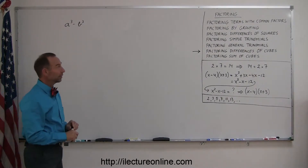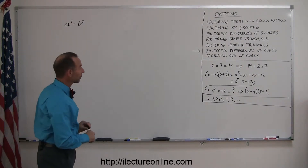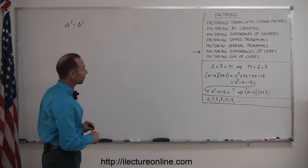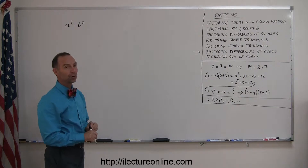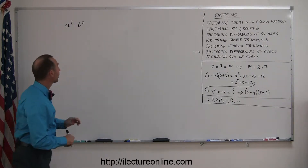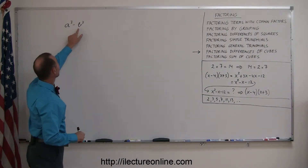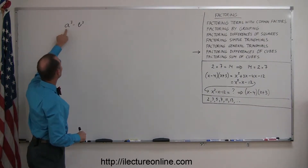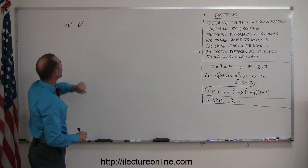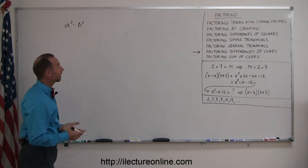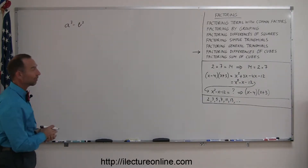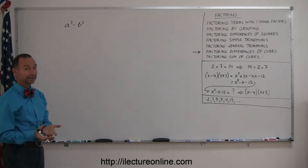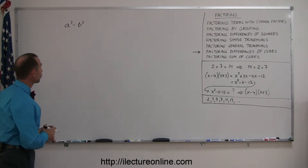The next type of factoring we're dealing with is called factoring the difference of cubes. Here we have two terms, A cubed minus B cubed — so A is cubed, B is cubed, and they're subtracted from one another. That's what's called the difference of cubes.